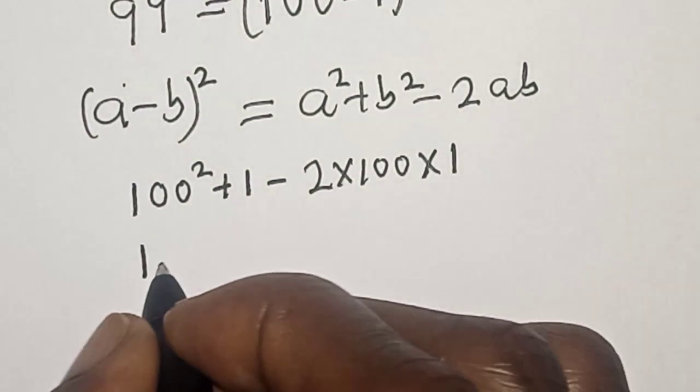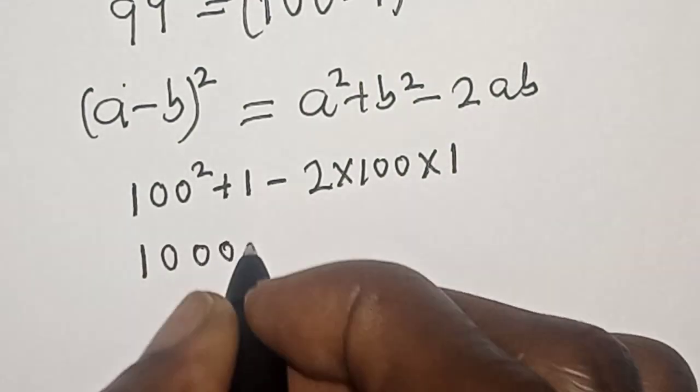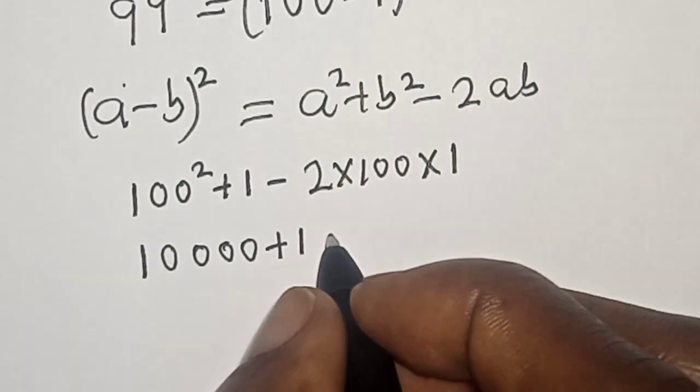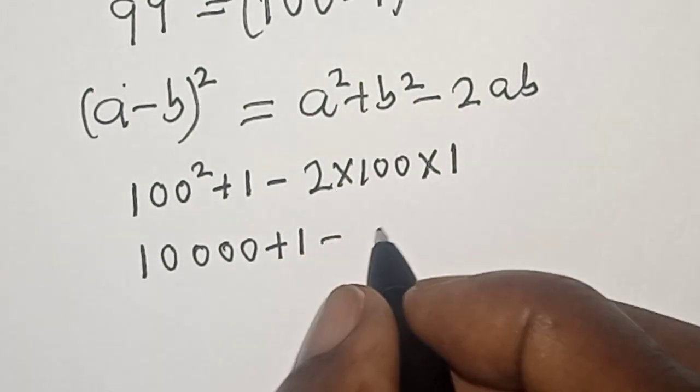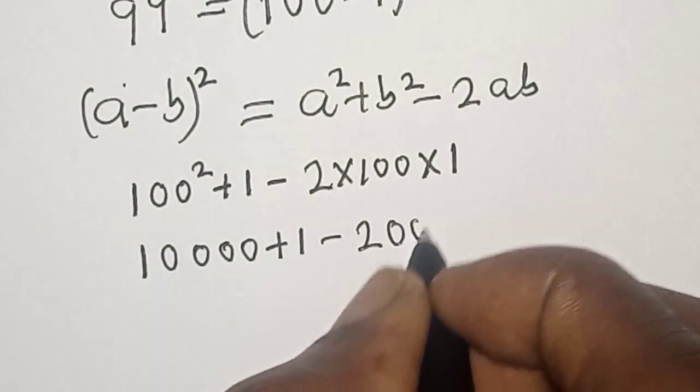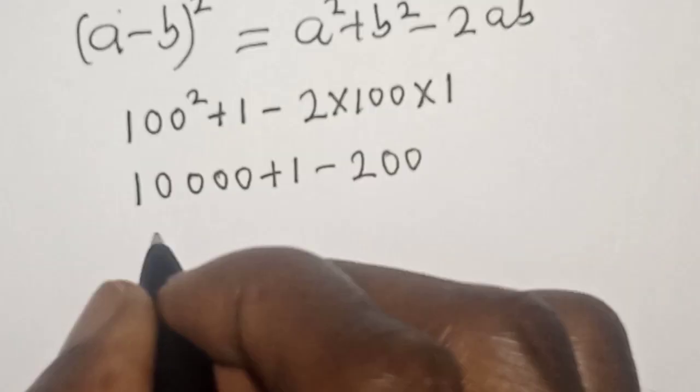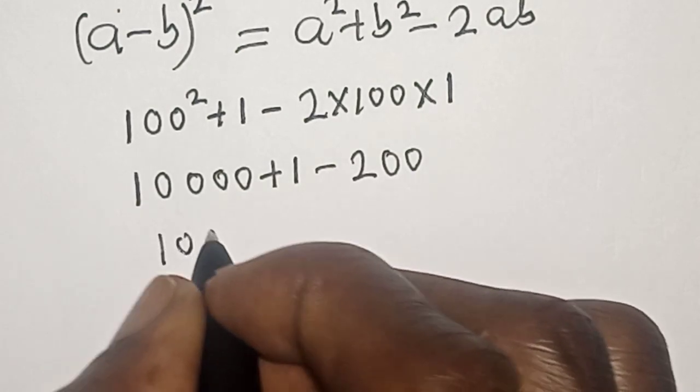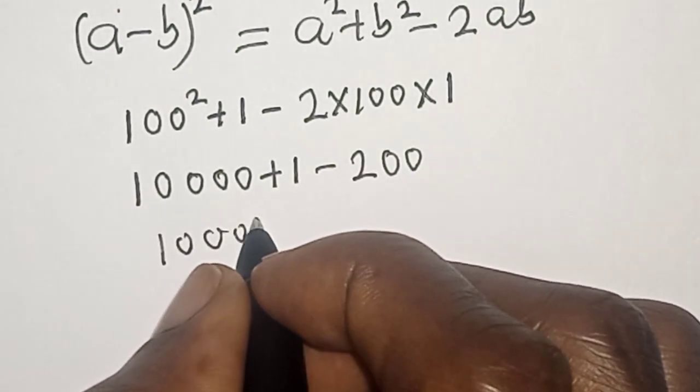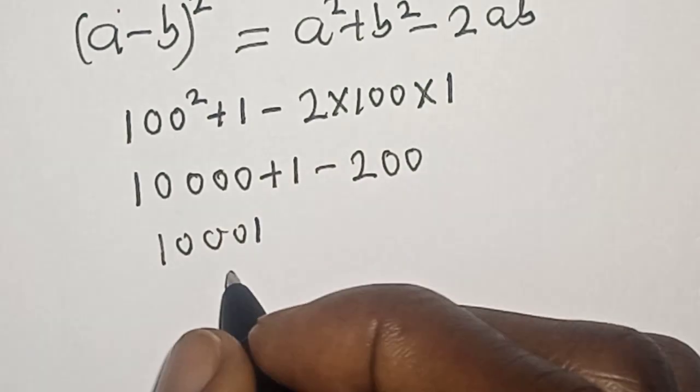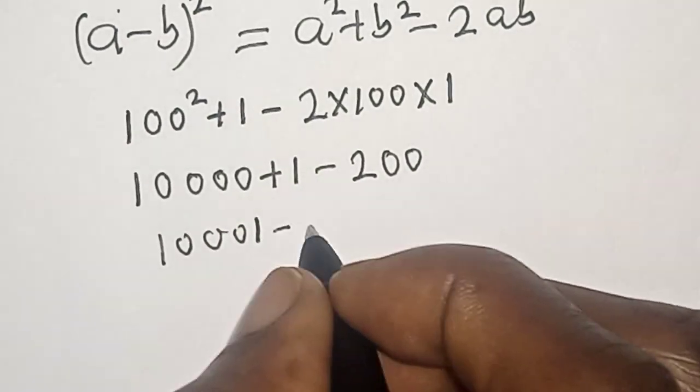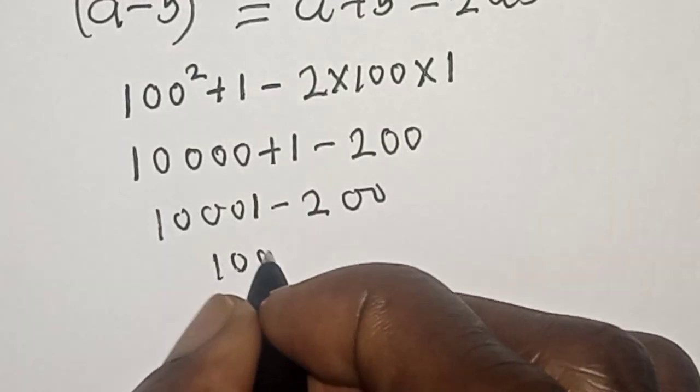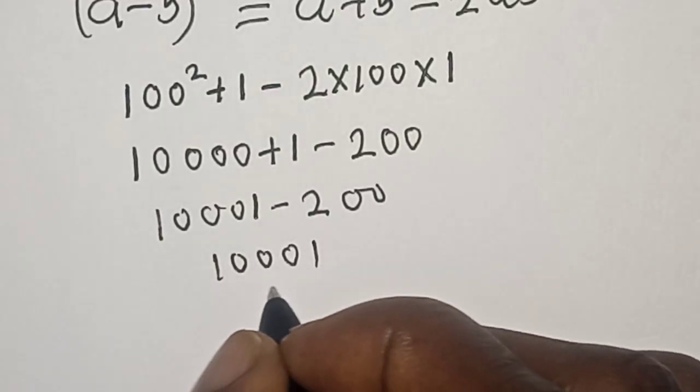10,000 plus 1 minus 2 times 100 times 1, this is 200. Now we have 10,000 and 1, this is 10,001 minus 200. Now you have 10,001, you subtract 200.